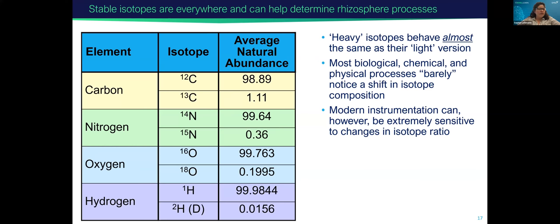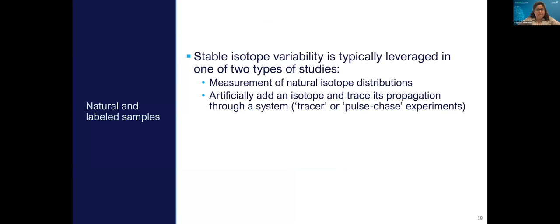However, heavy stable isotopes behave almost like their lighter versions. What this means is that most biological, chemical, and physical processes have a very small shift in their isotope composition. We can use instruments in our lab that are very sensitive to changes in isotope ratios to help understand some of these different processes. We can look at measurements of natural isotope distributions, or we can artificially add an isotope as a tracer label and see how that isotope propagates through a system — we can look at polytracer, label, and SIP, as Amir had mentioned.